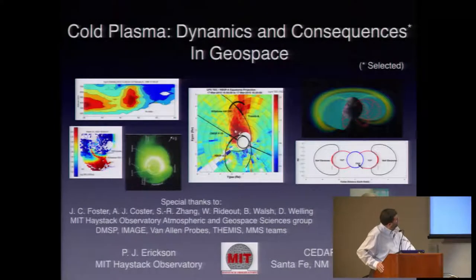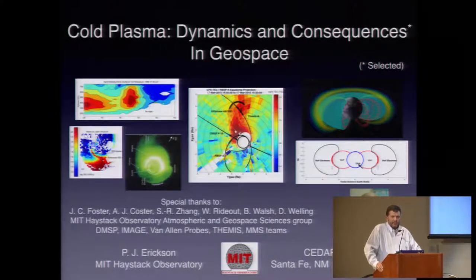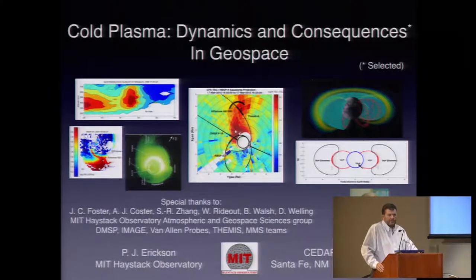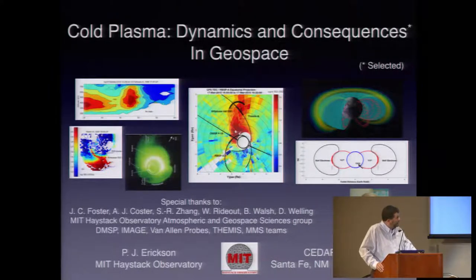I appreciate very much the opportunity to give this presentation. This is a GEM-CEDAR meeting, and we have a mixed bunch of people here. My title talks about cold plasma — I'll try to define what I mean by that in a minute, because there are many kinds of plasma in the geospace system, and they have a fascinating amount of variety. I'm going to try to be a little tutorial, and then I'm going to show you a couple of things that hopefully will convince those newer to this field that there's still plenty of stuff to work on. The more we look, the more we find fascinating processes out there to explore.